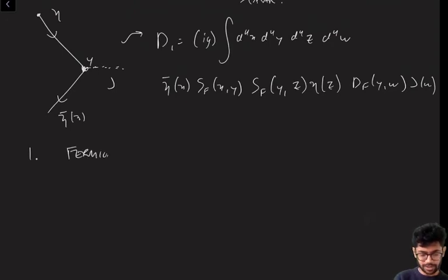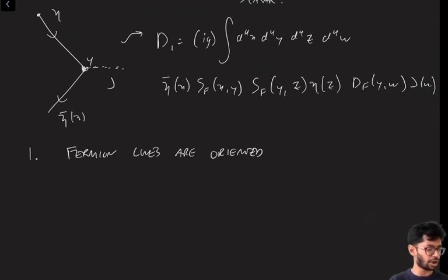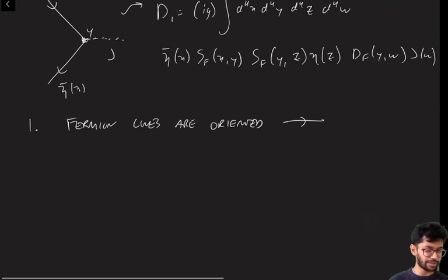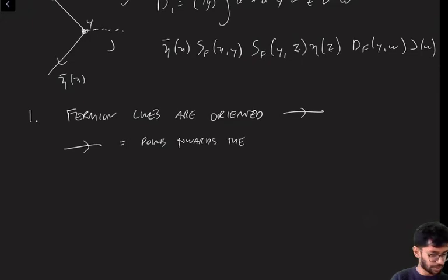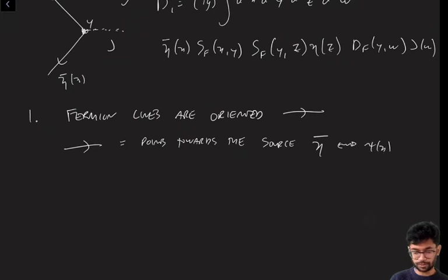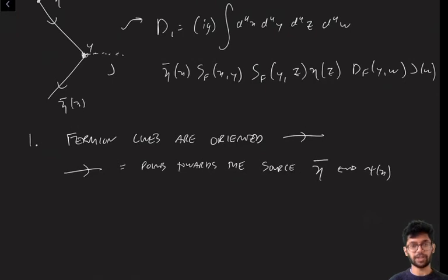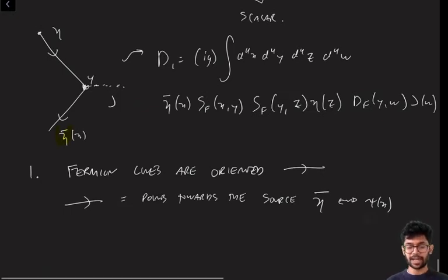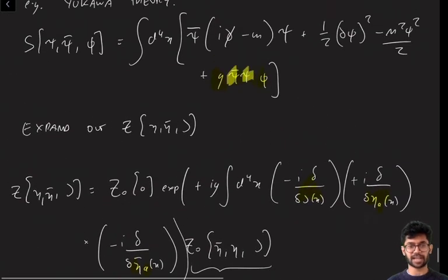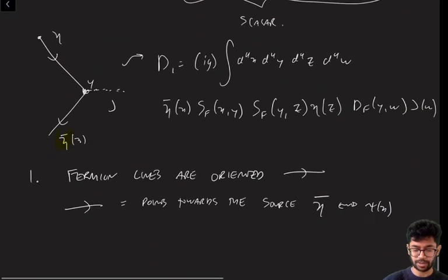There are really only two wrinkles I want to focus on rather than going through this in full detail. The first point is that fermion lines are oriented — they have arrows on them from the outset. This is not really because they're fermions per se; it's because they're complex fields, so particles differ from antiparticles, and you need to keep track of that. The convention I use is that the arrow points towards the source η̄, which is the source for the field ψ(x). At every interaction vertex, you have one arrow coming in and one arrow going out, because the interaction vertex is of the form ψ̄ψ.